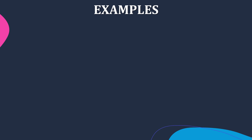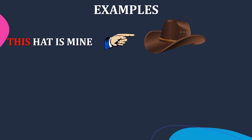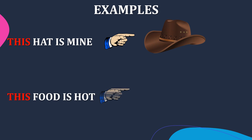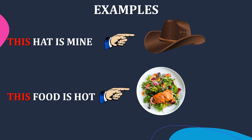Let's look into some examples. 'This hat is mine.' 'This food is hot.' Here you are talking about a singular object. These objects are placed near you — a hat is placed near you and a plate of food is placed near you. So we use the demonstrative adjective 'this' here.